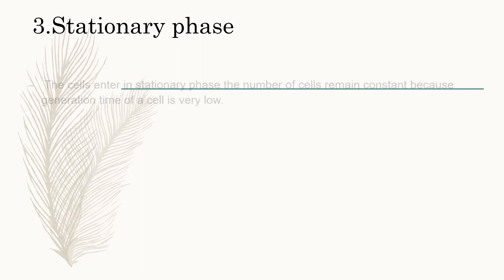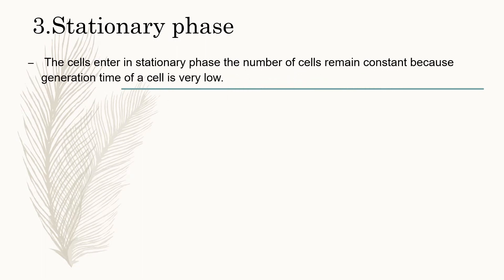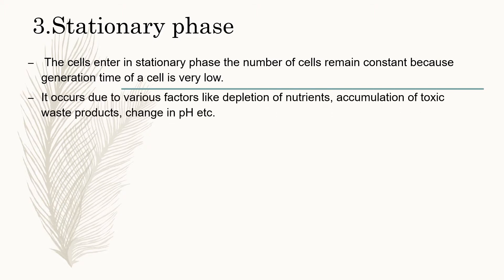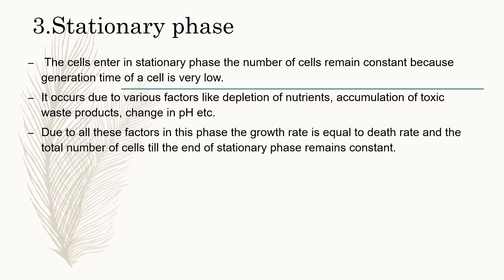The third phase of growth is the stationary phase. The number of cells remains constant because the generation time of the cell is very low, so multiplication rate and cell division rate are very low. This occurs due to various factors like depletion of nutrients, accumulation of toxic waste products, and change in pH. During the logarithmic phase, cells grew exponentially and utilized the maximum number of nutrients available in the nutrient media. This results in depletion of nutrients, accumulation of toxic waste products, and change in pH. Due to all these factors, the growth rate equals the death rate and the total number of cells remains constant throughout the stationary phase.